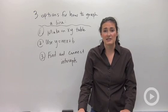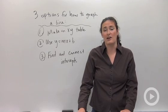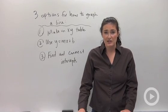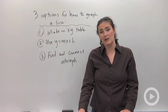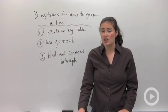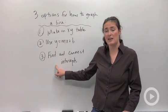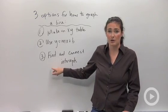The third option you have is to find and connect the x and y-intercepts. The way you find the x-intercept is by substituting in y equals zero, and to find the y-intercept, you substitute in x equals zero. So that's a good option. Most people like this method if the equation is given to you in standard form.